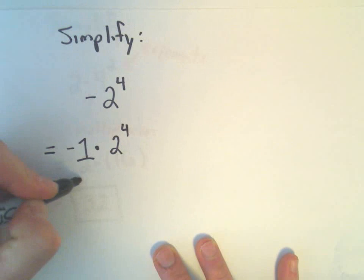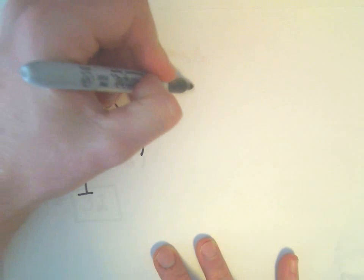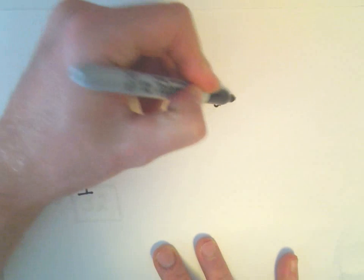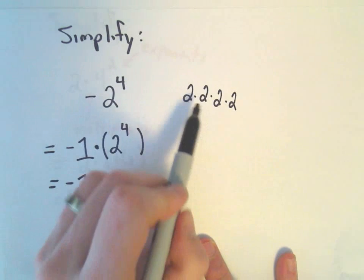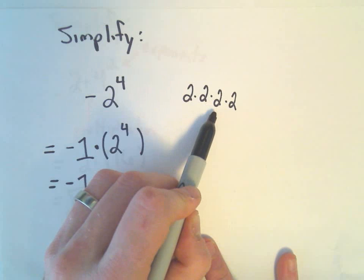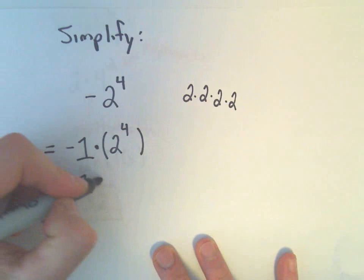So we would have negative 1 times 2 to the 4th. Well, again, by the example we just did, we have to do exponents first. So 2 to the 4th is 2 times 2 times 2 times 2. Let's see. So 2 squared is 4, times another 2 is 8, times another 2 is 16.